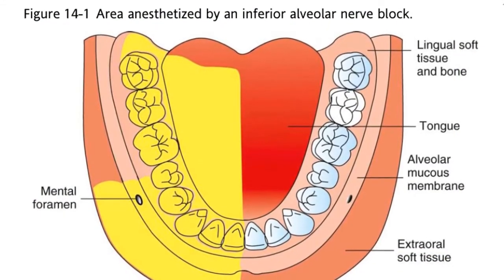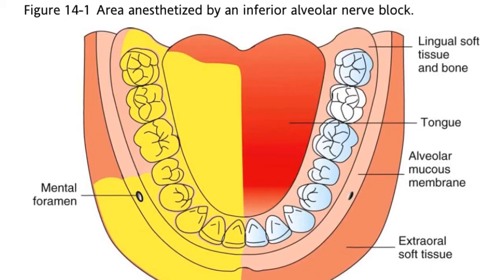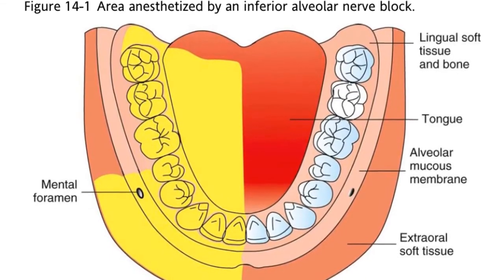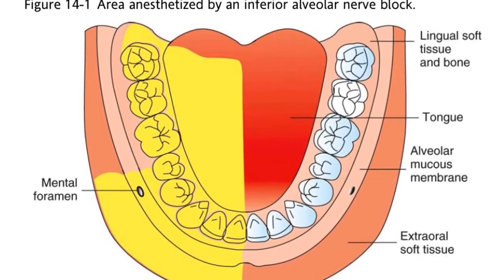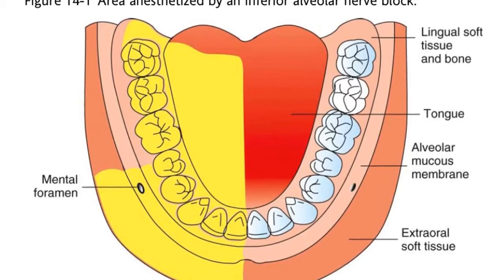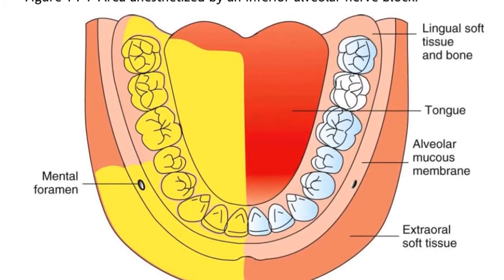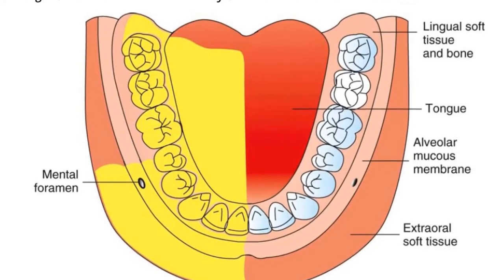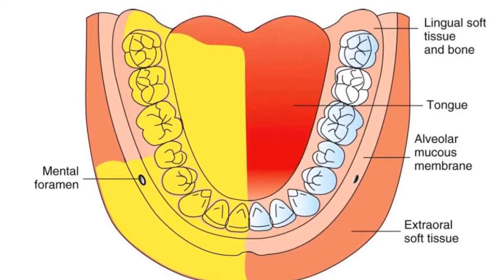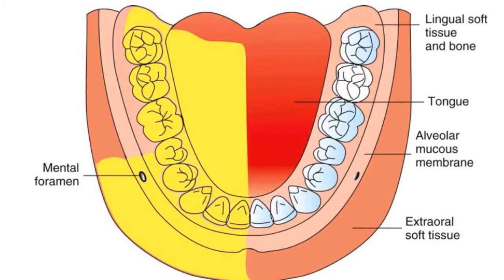The areas that are anesthetized are the mandibular teeth to the midline, body of the mandible, buccal mucous membrane, and the anterior two-thirds of the tongue and floor of the cavity.